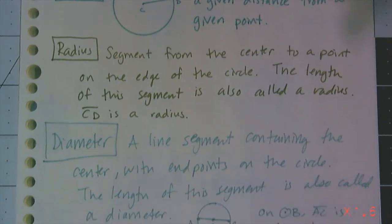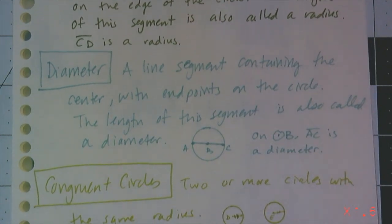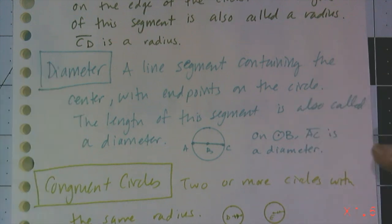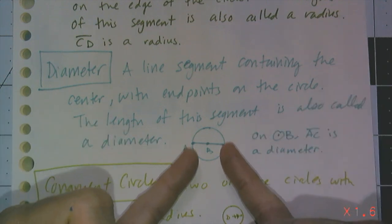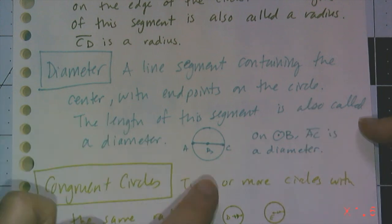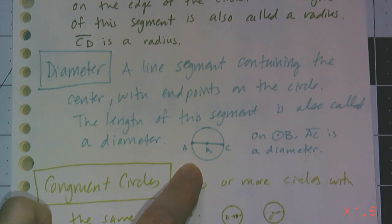Similarly, diameter is a line segment containing the center, but it has endpoints on the circle. The length of the segment is also called a diameter. So like radius, it has two meanings. Diameter is either the physical line segment, or it's the length between the two endpoints. And so in this case, I have circle B, and AC is the diameter of circle B.